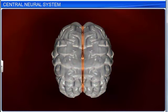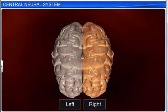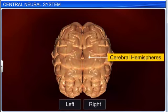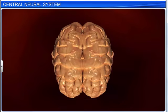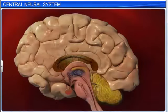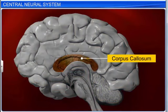A deep cleft divides the cerebrum longitudinally into two halves, the left and right cerebral hemispheres. A thick band of nerve fibers called the corpus callosum connects the two hemispheres and facilitates communication between them.